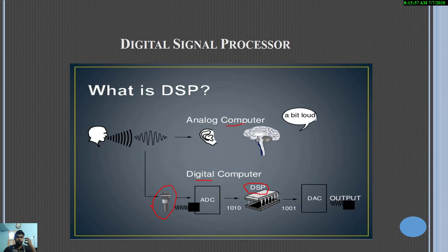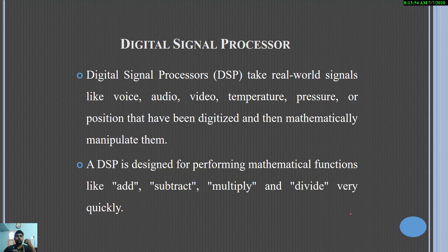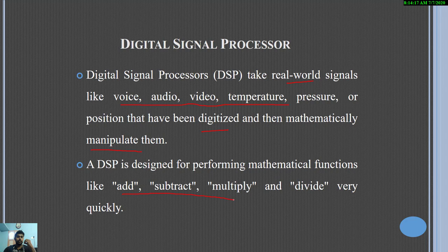The DSP processor can be available in any CPU, that is a personal computer or any electronic devices. This processed digital output is given to analog in order to get a real-time analog signal as a useful signal. In general, the DSP processor takes real-world signals like voice, audio, video, temperature, pressure, or position that have been digitized and mathematically manipulates them. DSP is designed for performing mathematical functions like addition, subtraction, multiplication, and division, and this is done very quickly.